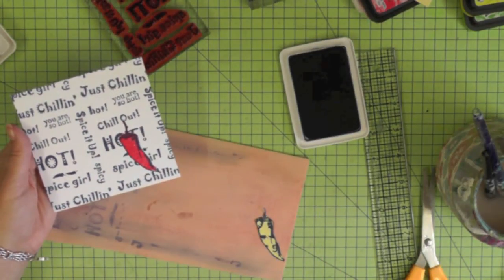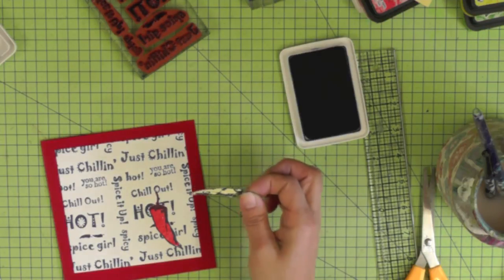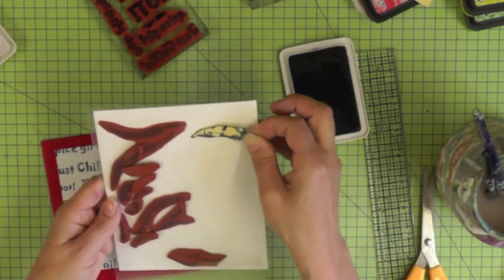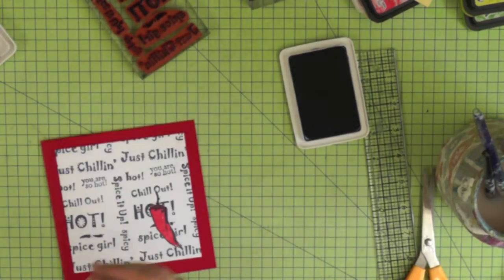Here's our background all nicely stamped and it's time to take off the mask and reveal that gorgeous red chili pepper. Remember what I said about that little mask that you've created? Particularly if it's a really fussy cut mask make sure you just keep hold of it and place it somewhere where you know where to find it and I just pop it in the pocket with my stamps.